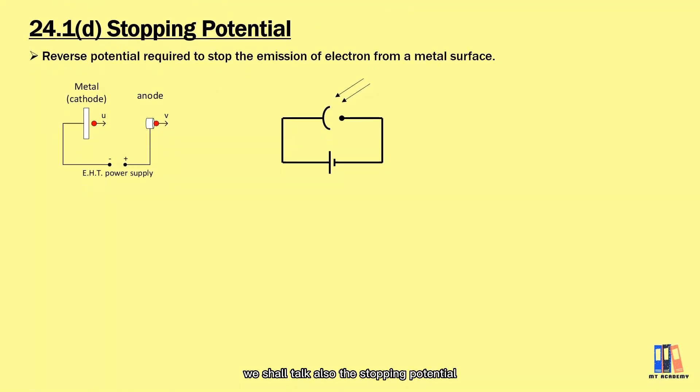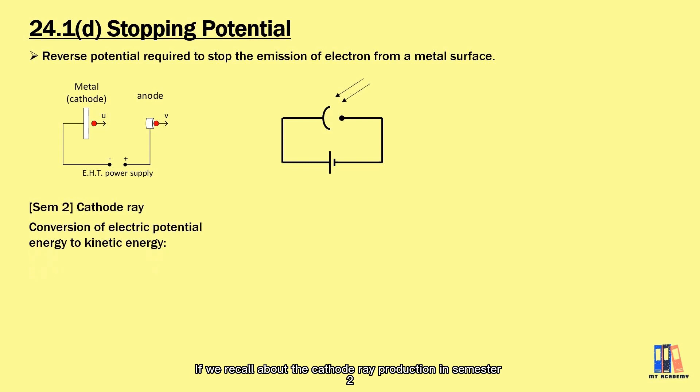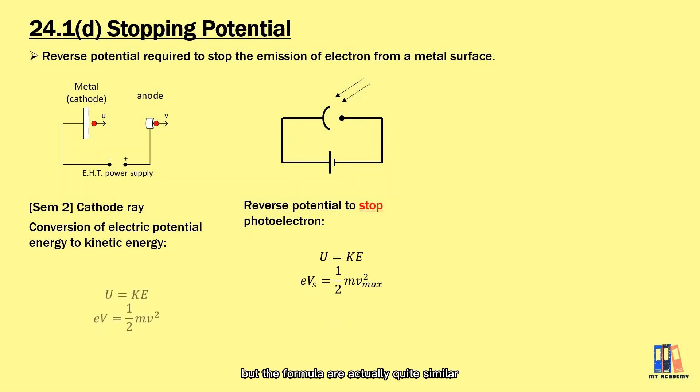If we recall about the cathode ray production in semester two, we apply potential difference to accelerate the electron. The stopping potential is the other way around where we apply reverse potential to stop the emission of photoelectrons. Both concepts are different but the formulas are actually quite similar that we have electric potential energy is equal to the kinetic energy of the electron. The difference here is that we use reverse potential to counter the kinetic energy. So this stopping potential is not about the energy conversion.